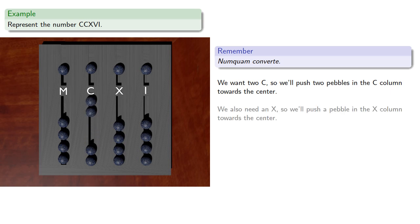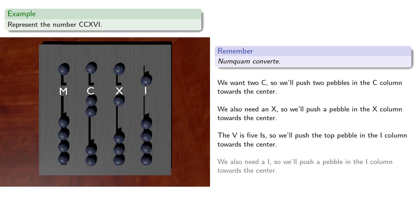We also need an X, so we'll push a pebble in the X column towards the center. The V is 5 I's, so that means we'll push a top pebble in the I column towards the center. And we also need an I, so we'll push a pebble in the I column towards the center.